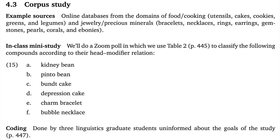The first study is a corpus study. Let's start with the design, which is pretty intuitive. The examples come from online databases from the domains of food and cooking and from jewelry and precious minerals. The authors downloaded really big lists of compound nouns from these sites to try to get naturalistic, representative samples. I really like this approach, but we should have in mind that the choice of examples is going to define the study, and we should think about this when considering limitations. We should ask what would happen if we focused on different domains and example sources.